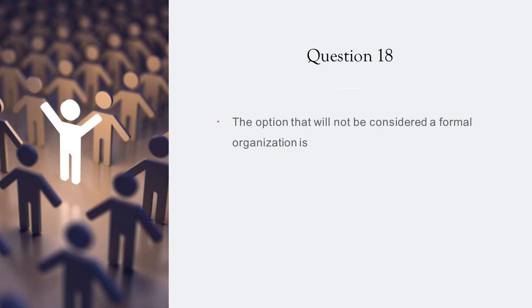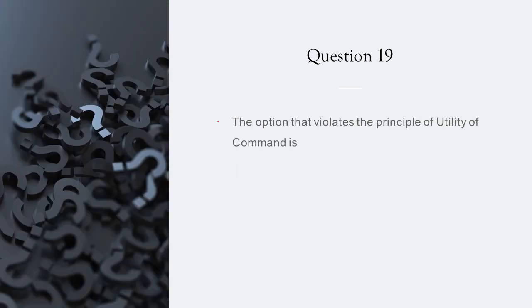The option that will not be considered a formal organization is a group of friends. The option that violates the principle of unity of command is product organization.